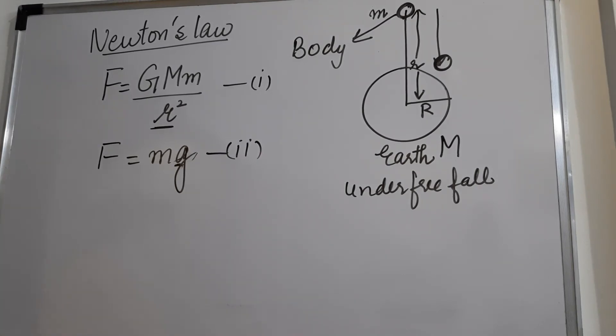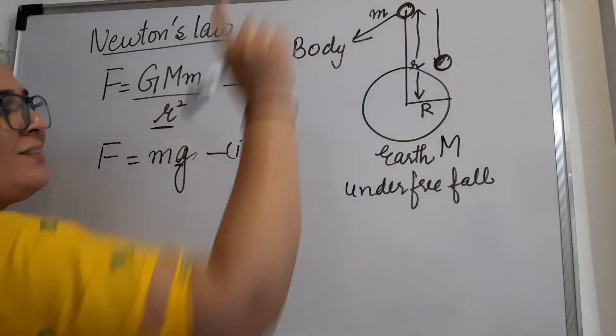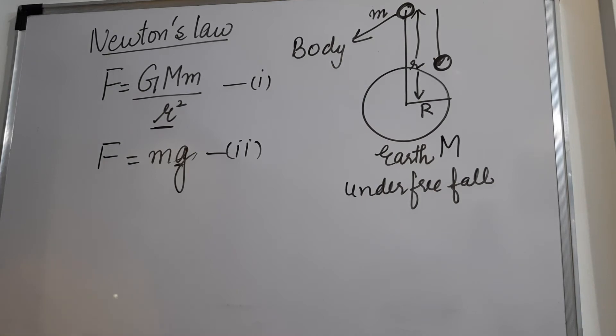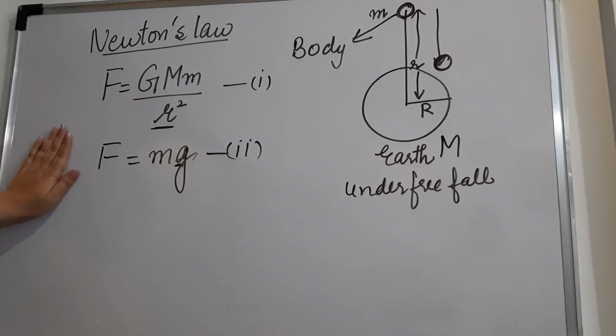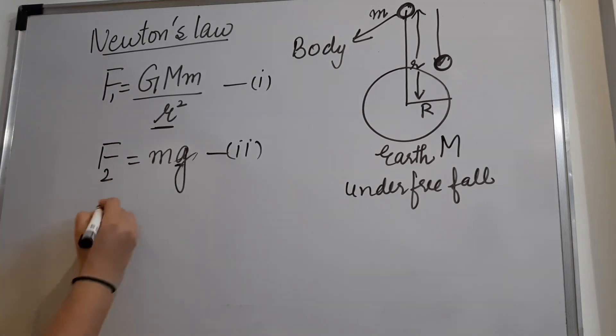Now, since the body is same in both the situations—in the first situation the object was far away from the Earth, and in the second situation the object has come down to the surface of Earth—it means that Newton's law of gravitation and Newton's second law of motion are going to be same. The value of both these forces are going to be same. So I can write it as F1 and F2. Because these are going to be same as object is same in both the cases, so I can write it as F1 equals to F2.